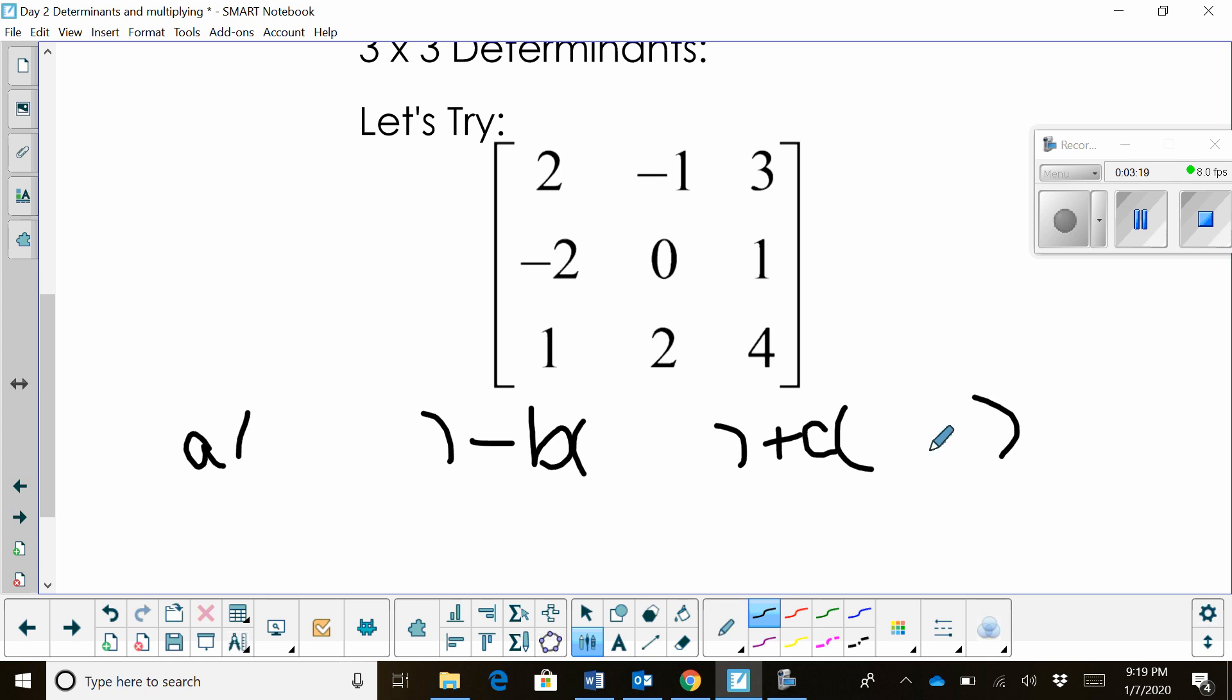So what I'm going to do is I'm going to write A parentheses minus B parentheses plus C parentheses. And in the parentheses I'm going to write my formula for my 2 by 2 matrix. So let's start off by plugging in values. A is 2.